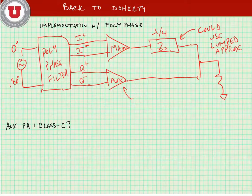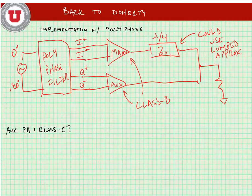In the original Doherty power amplifier, both of these amplifiers, the main amplifier and the auxiliary, were class B. But an improvement that can be made to the architecture is to make the auxiliary PA a class C amplifier.